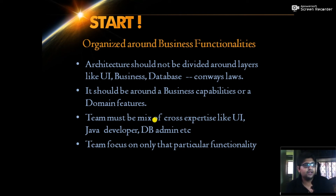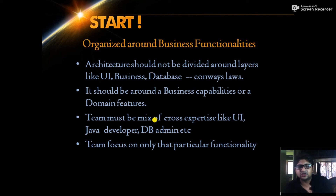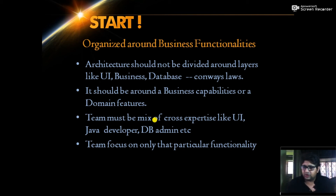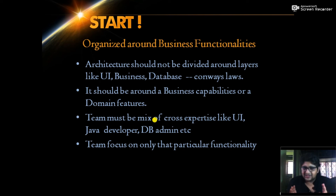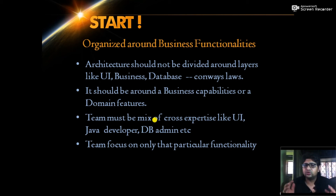In monolith or layered architecture, all UIs — finance UI and HR UI — are clubbed into a UI layer, all logic is in a business layer separated only by packages, and all data sits in one relational database. That is not organizing around business functionality. In microservices, you need to physically divide your business functionalities. Each business functionality should have encapsulated data and communicate with others through a lightweight medium.